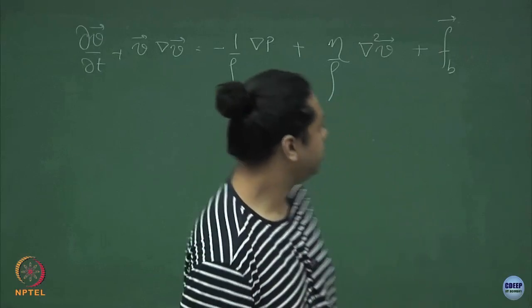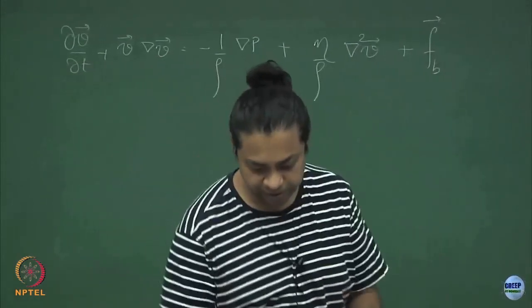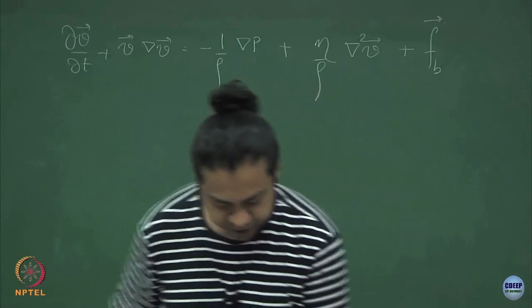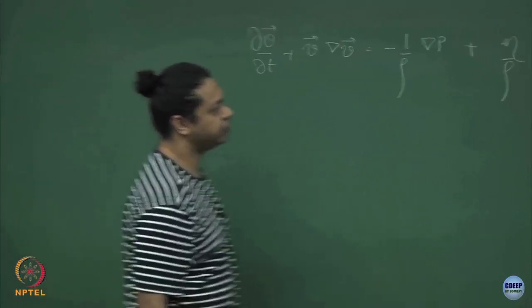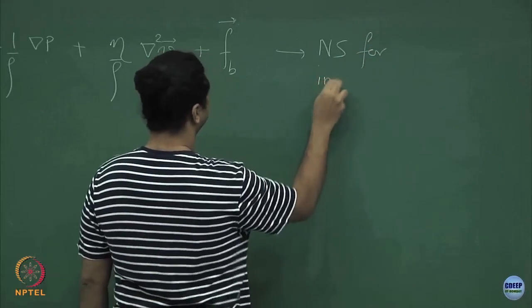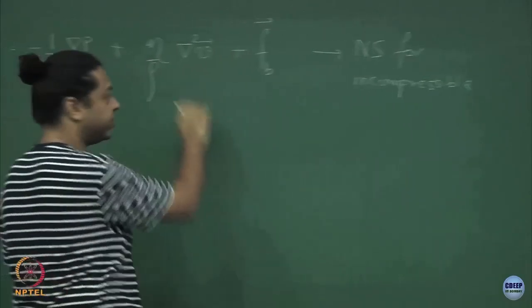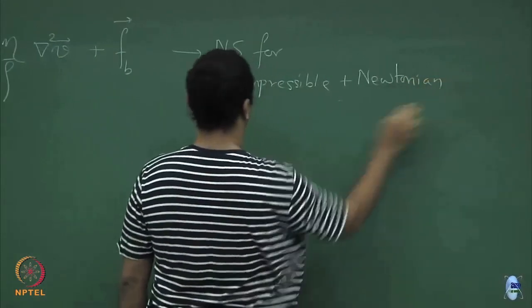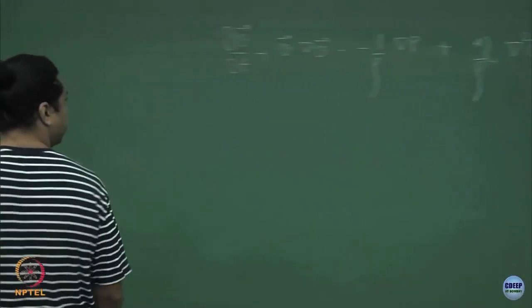Today what we will look at is solving this in one or two simple cases; we will leave the complicated cases for later. But before that, I want to mention a couple of limits of this equation. This is the full Navier-Stokes, and remember this is for an incompressible Newtonian fluid — otherwise we would have another second derivative term.